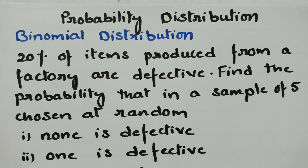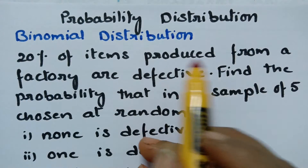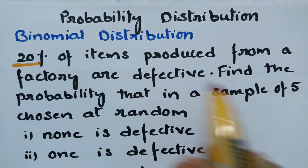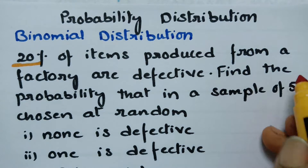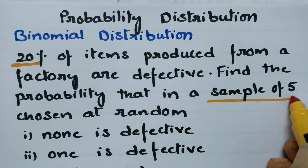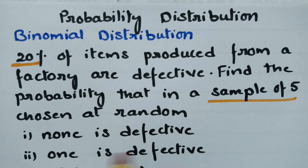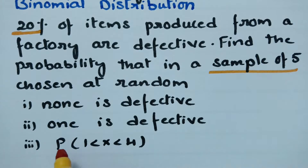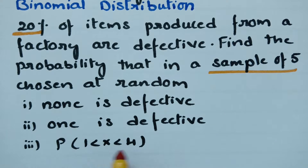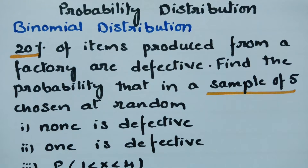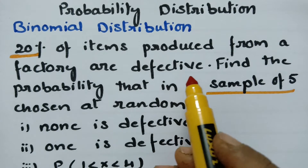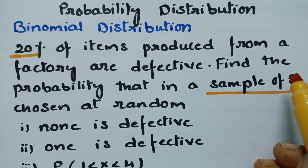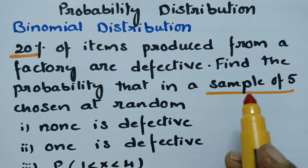Today's video is on binomial distribution, a topic from probability distribution. The problem: 20% of items produced from a factory are defective. We need to find the probability that in a sample of 5 chosen at random: none is defective, one is defective, and the probability that 1 less than x less than 4.